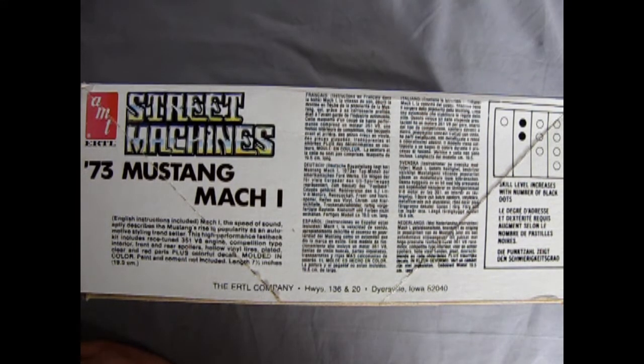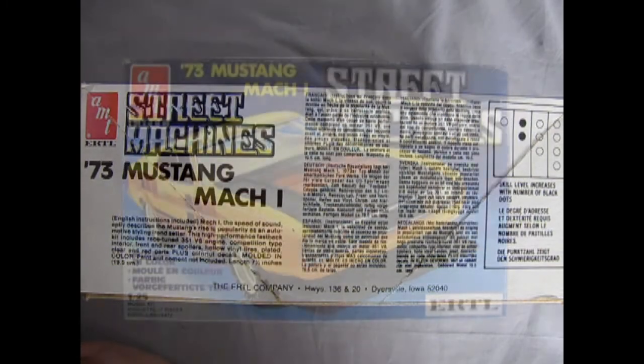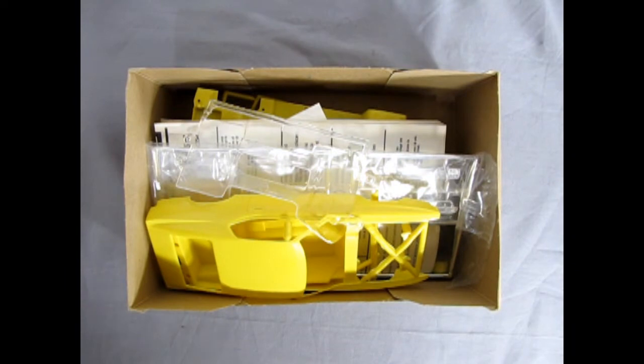Molded in color, paint and cement not included. Length is seven and a half inches or 19.5 centimeters. Now let's take off the lid of our 73 Mustang Mach 1 street machine and see what's inside.